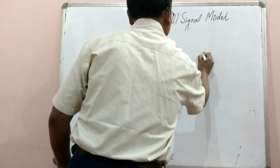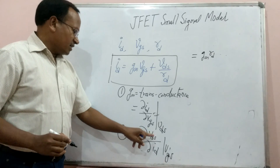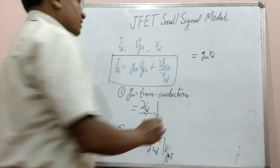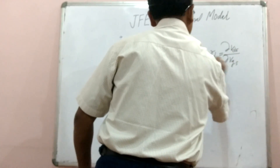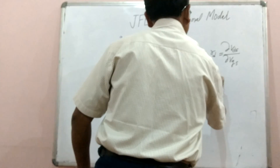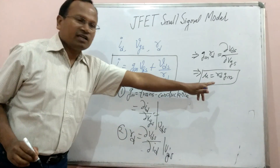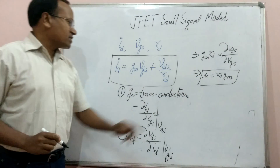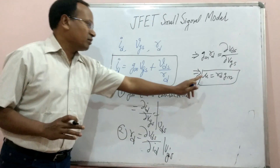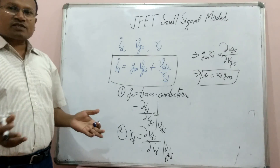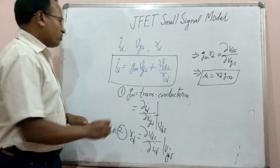The third parameter is obtained by multiplying RD and GM: mu = RD × GM. This equals ΔVDS/ΔVGS, which we write as mu — the amplification factor, or internal amplification factor, of JFET. Mu = RD × GM, and it is a unitless quantity.